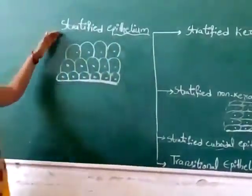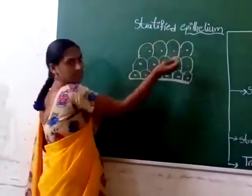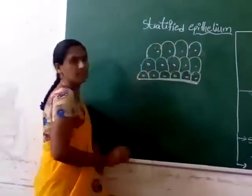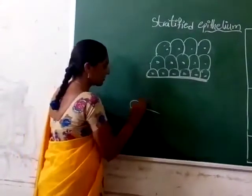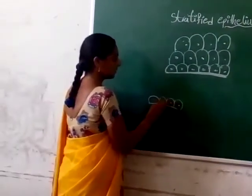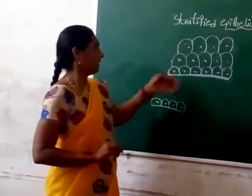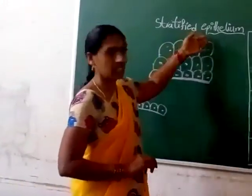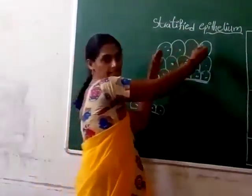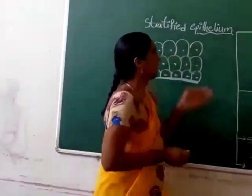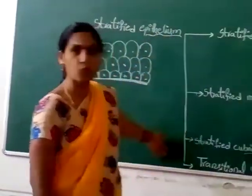Stratified epithelium means the cells are arranged in multilayers. Last class, we discussed about simple layers, which means cells are arranged in only one layer. Stratified epithelium is classified into four types.